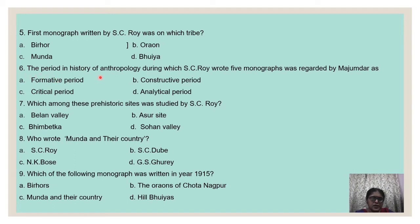Seventh question: which among these prehistoric sites was studied by S.C. Roy? Options: Belan Valley, Asur site, Bhimbetka, Sohan Valley. The correct answer is: the Asur site. Then: who wrote Munda and Their Country? Answer is S.C. Roy. Which of the following monographs was written in 1915? The right answer is B — The Oraon of Chotanagpur.